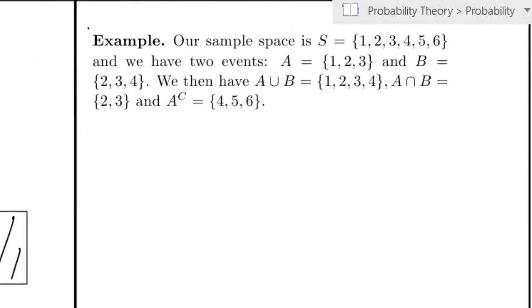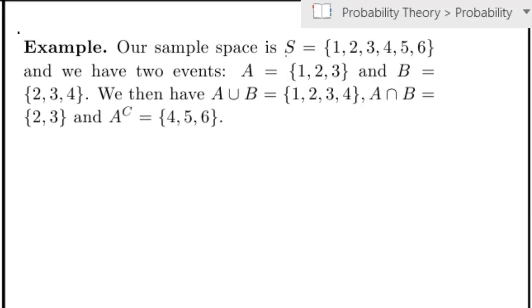Here, as an example, we toss a dice with the usual sample space S, and I have defined two events A and B. A is the event that I toss 1, 2, or 3. B is the event that I toss 2, 3, or 4.